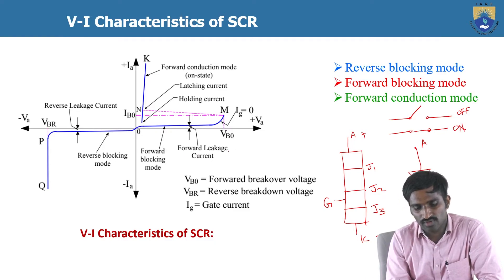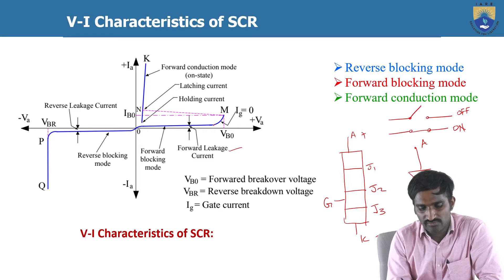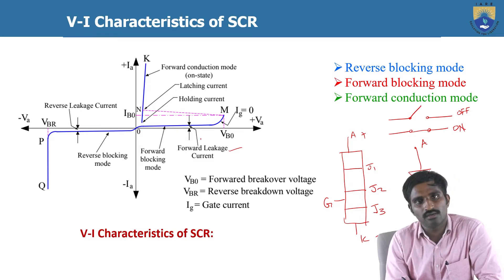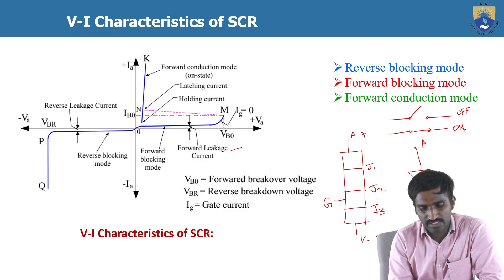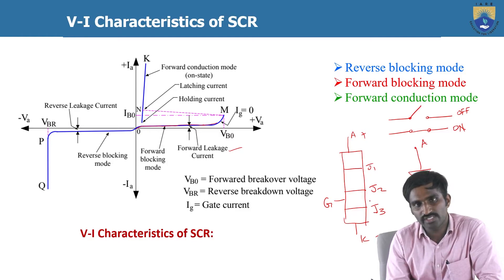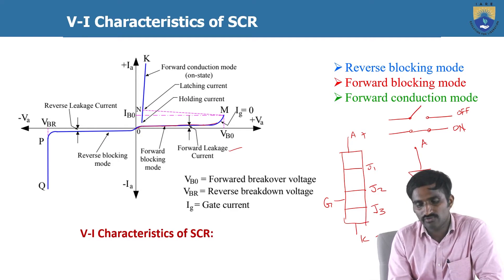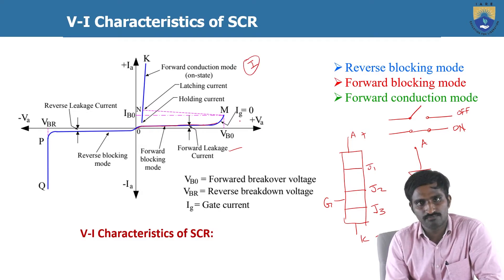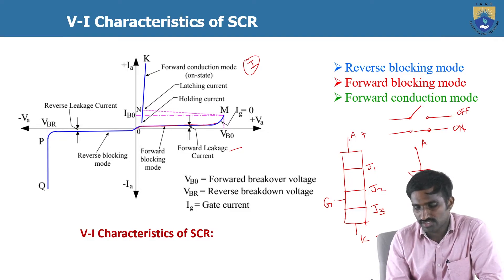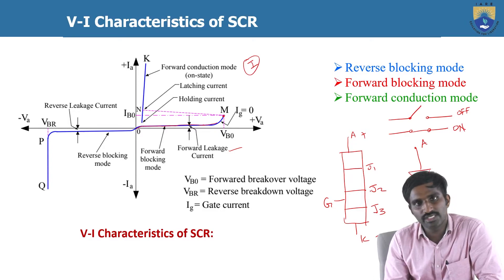Practically, there is some current that will flow through this SCR because junctions J1 and J3 are in the forward biased mode. That current is called the forward leakage current, even though the SCR is in the turn-off position. This small current is the forward leakage current, and this is the forward blocking mode. If you keep increasing the forward biased voltage, at a particular point the forward biased voltage will cause junction J2 to break down.